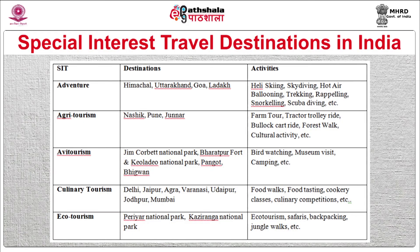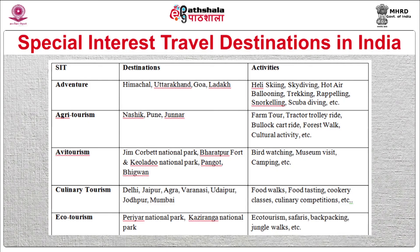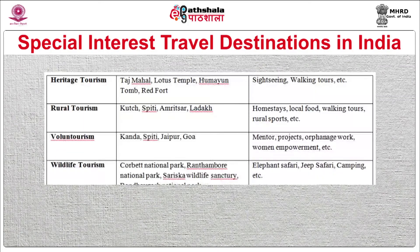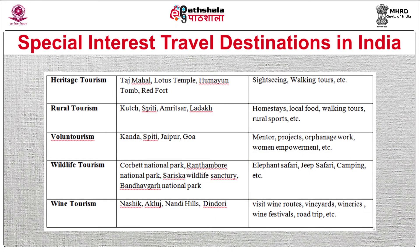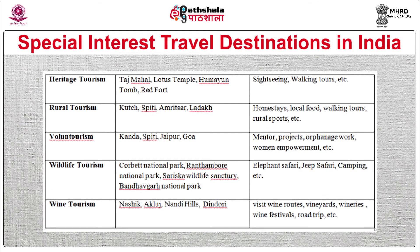For ecotourism in India, Periyar National Park and Kaziranga National Park are among the popular destinations, with activities such as backpacking, safaris, and jungle walks. For heritage tourism, famous sites include the Taj Mahal, Lotus Temple, Humayun's Tomb, and Red Fort.